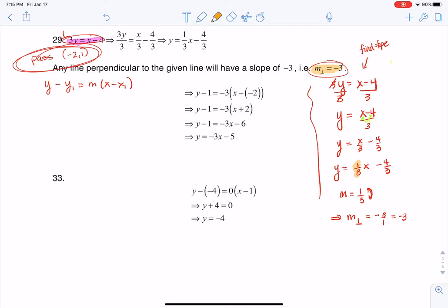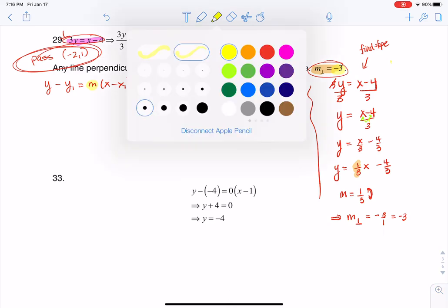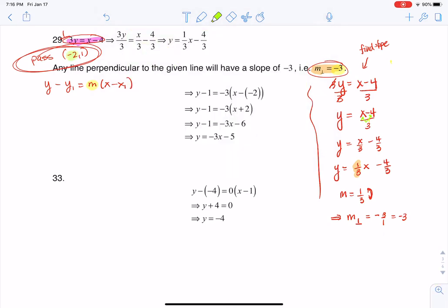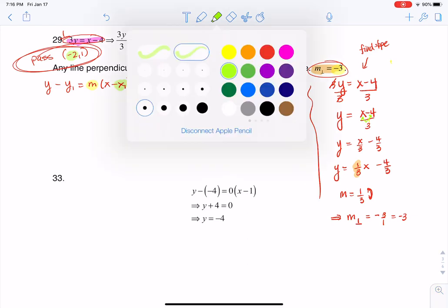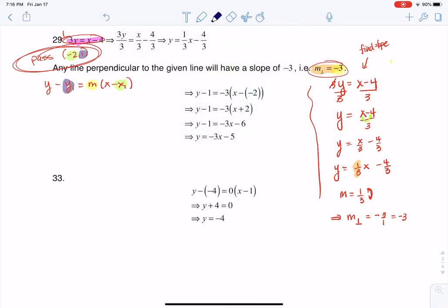Well, let's start to plug these in. So I know that -3 is going to go in here for my slope. I also know that -2 is going to go in here for x₁. And I know that 1 is going to go in here for y₁. So I'm going to substitute those three values into this formula.